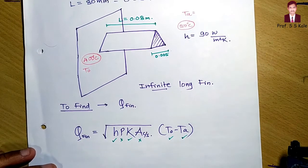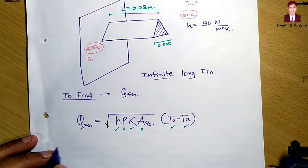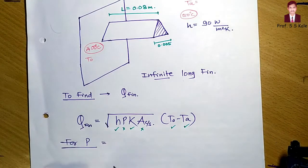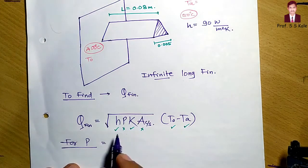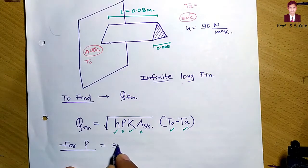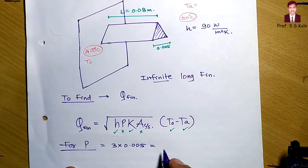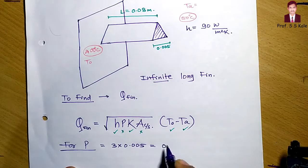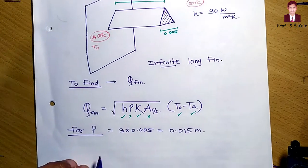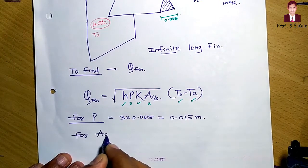Let's calculate the perimeter first. The perimeter of an equilateral triangle is the sum of three sides, or 3 × side. The side is 0.005 meter, so the perimeter P = 3 × 0.005 = 0.015 meter.